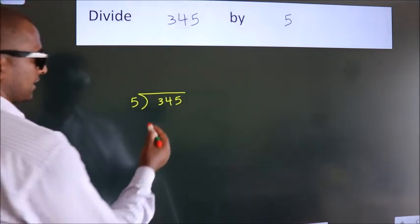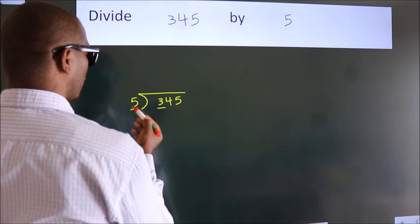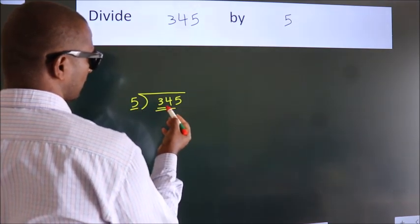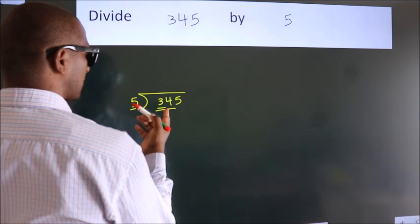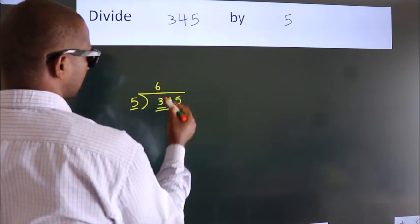Next, here we have 3, here 5. 3 is smaller than 5, so we should take two numbers, 34. A number close to 34 in the 5 table is 5 times 6, which is 30.